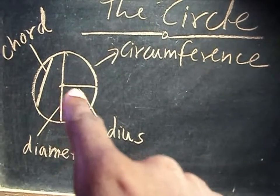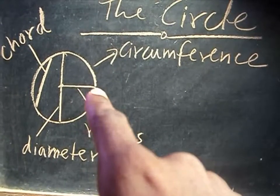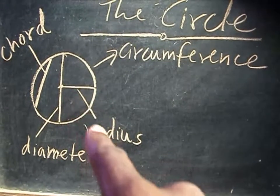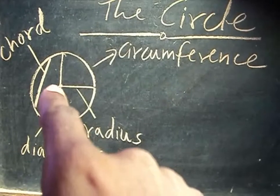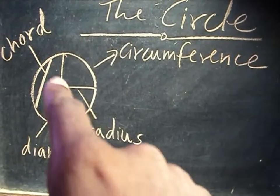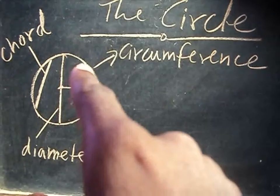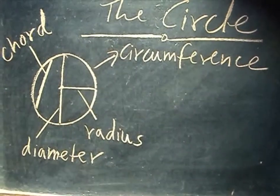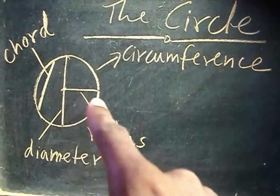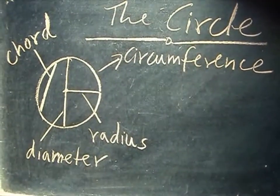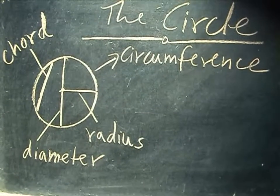From the middle or the center to the end, a straight line like this is what is called the radius of the circle. It could be from there to there, from here to here — anywhere along the circle. So the radius is from the center to the circumference of the circle.